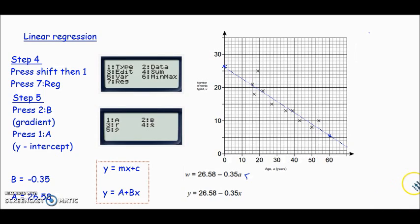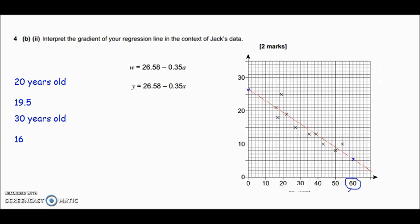Part B(ii) says interpret the gradient of your regression line in the context of Jack's data. What does that mean? It's basically saying draw a conclusion from the graph. The gradient is if you go along a certain number in the x direction, how does your y value change? Remember our x-axis is the ages. So as you get older by a certain amount, how does that affect your ability to type a text message? We see we've got a negative gradient. So as you get older, you can type less and less.